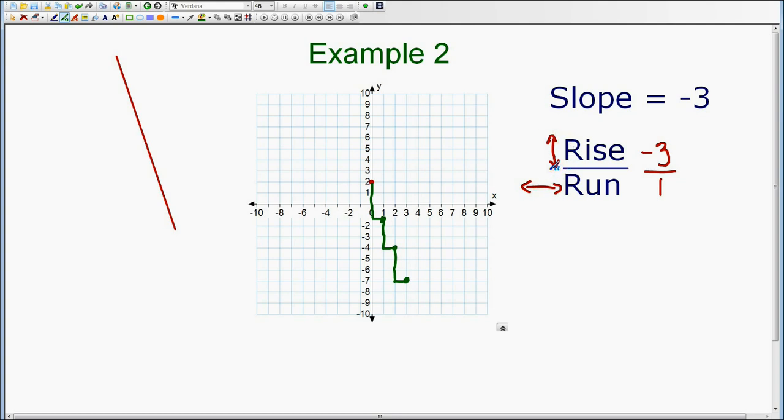So just think of the slope as a set of directions. Once you have 2 or 3 points on your graph, you can draw a straight line through those points. And I would recommend using a ruler to draw that straight line.